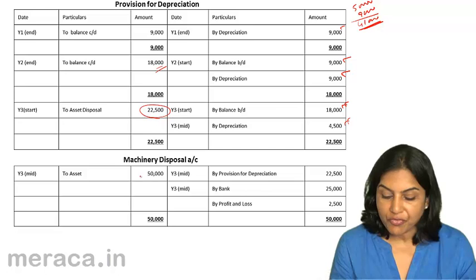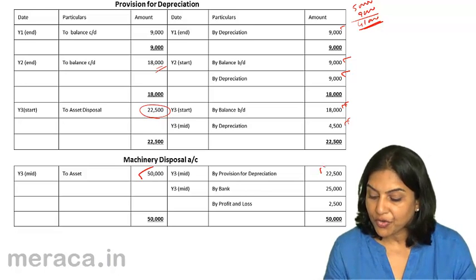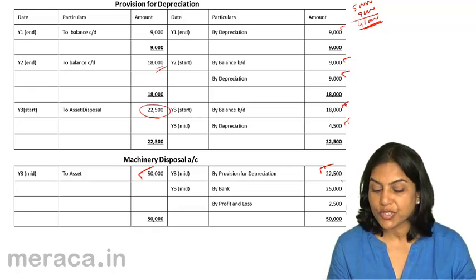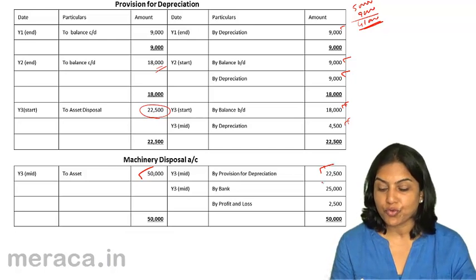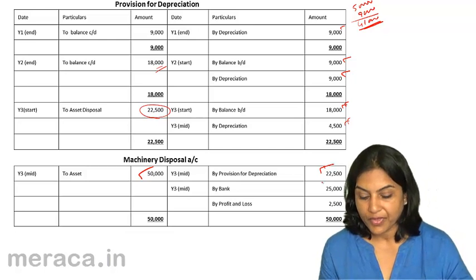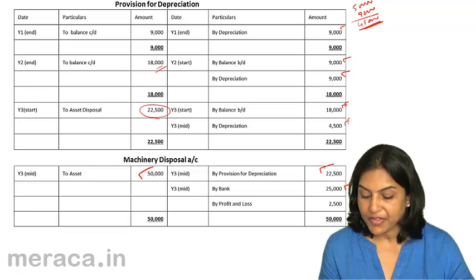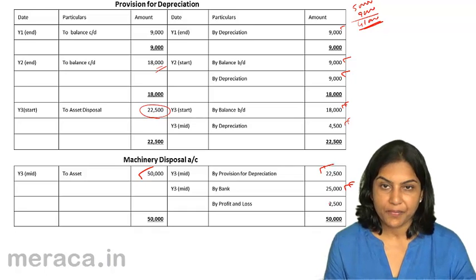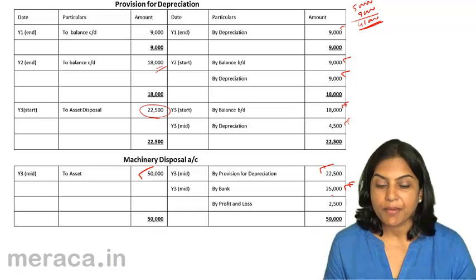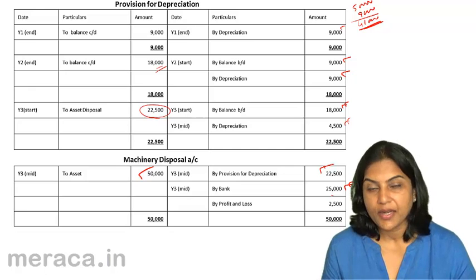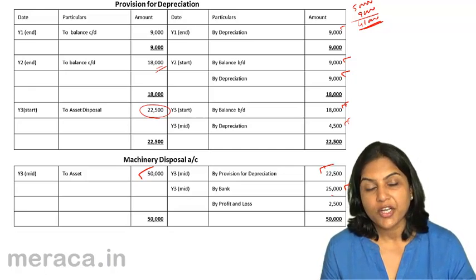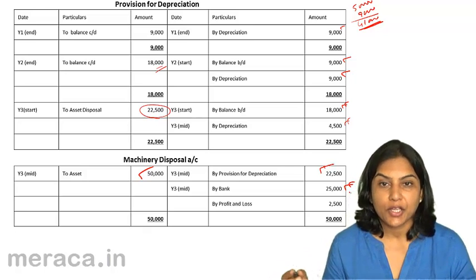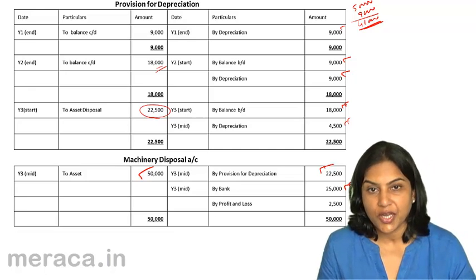In the machinery disposal account, 50,000 is transferred from the asset and 22,500 is transferred from the provision for depreciation account. Therefore, 27,500 is the written down value. We sell the machine for 25,000, so a loss of 2,500 is transferred to profit and loss. This is how accounts are prepared on disposal of an asset while using the provision for depreciation account.